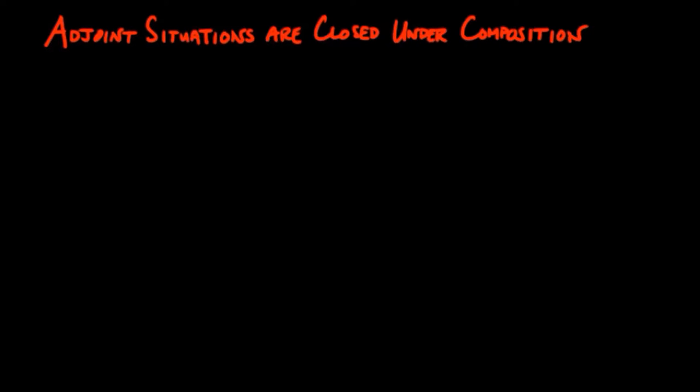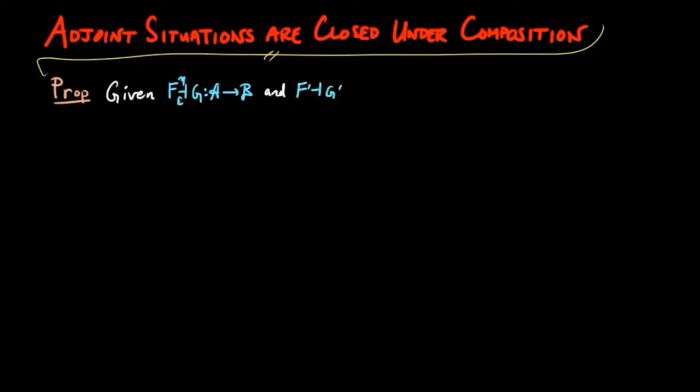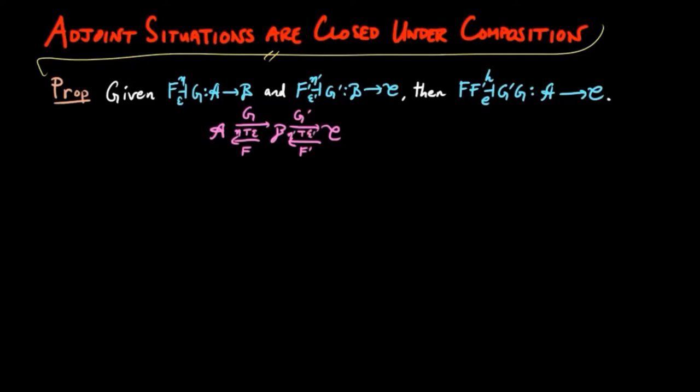Adjoint situations are closed under composition. Precisely, if we are given adjoint situations FG from A to B and F prime G prime from B to C, then F F prime G prime G is an adjoint situation from A to C, as indicated by the following diagram.